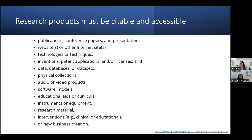What counts as a research product? The most important criteria is that it must be citable and accessible — it can't be a paper that's hiding under your bed. Products can range from publications, conference papers and presentations, websites, technologies or techniques, inventions, patent applications, data, physical collections, audio and video, software and models, as well as new business creation.